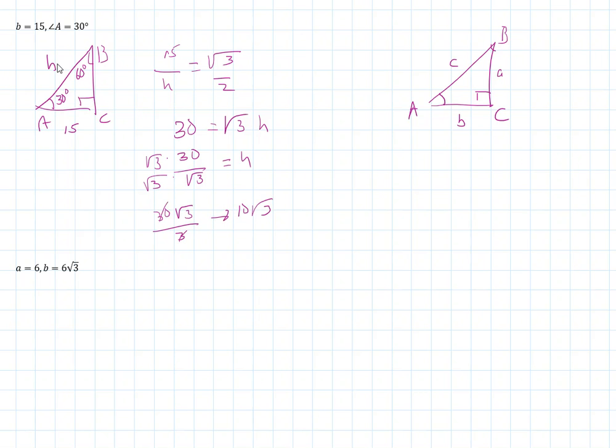So this side would be 10 root 3. Now we can use the fact that the side opposite 30 is always half the hypotenuse, so this would be 5 root 3, because half of 10 root 3 is 5 root 3.